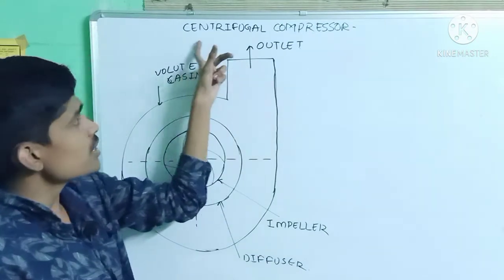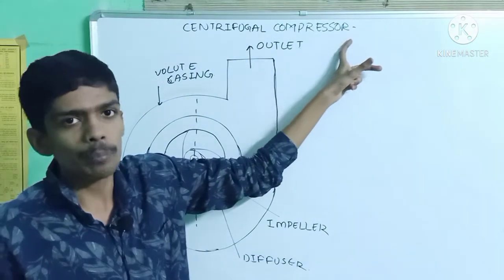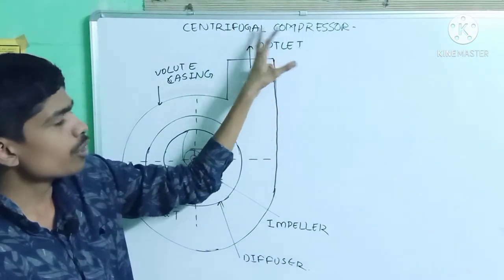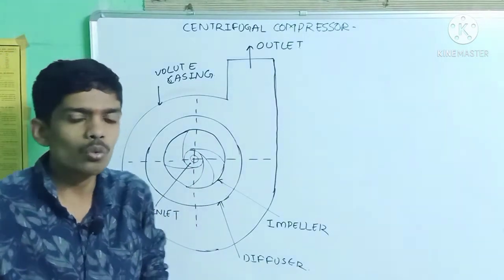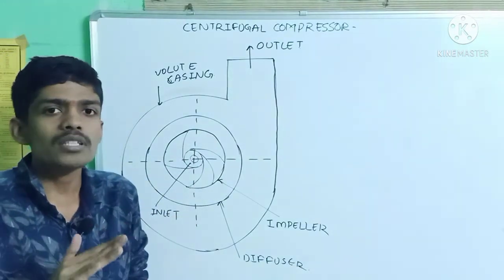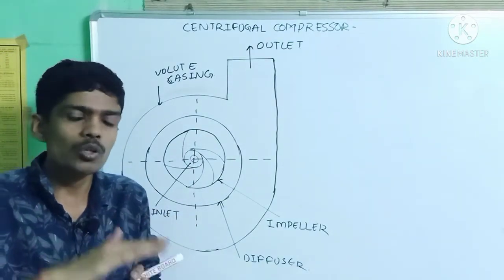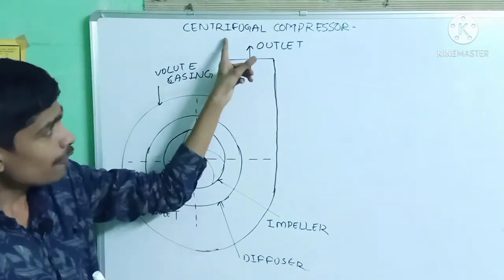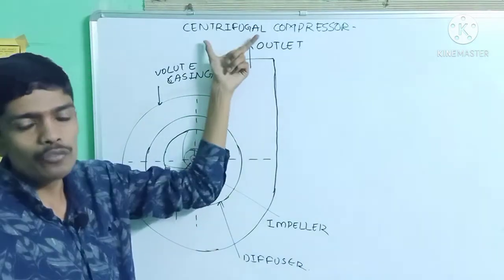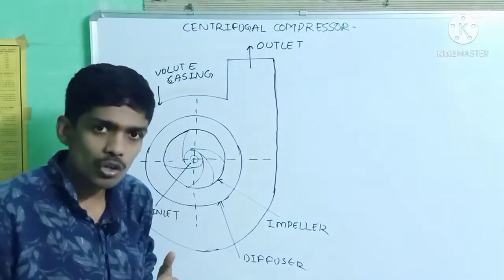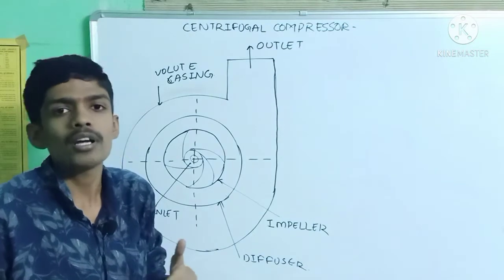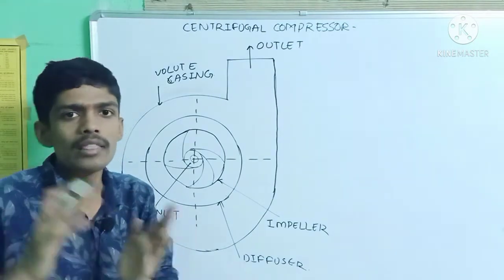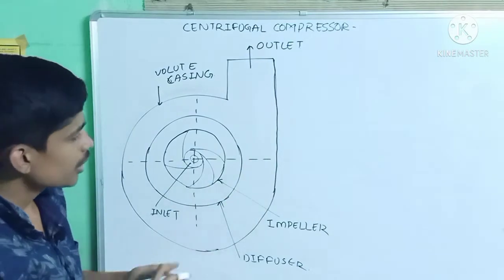Next is the centrifugal compressor. It works on the centrifugal principle. The work of the compressor is to increase the pressure of the refrigerant. The centrifugal compressor increases the pressure of the refrigerant by first creating a high velocity and then converting part of that kinetic energy into pressure energy.